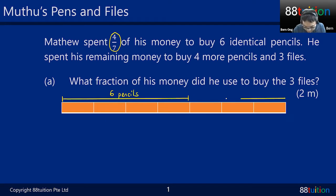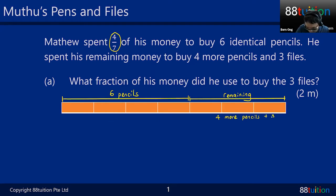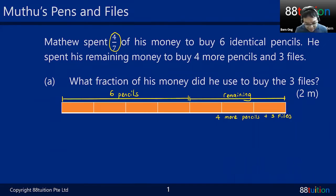He spent the remaining amount of money — this is your remaining amount. What does he do with it? He went to buy four more pencils and also three files. That's why this question involves both pencils and files.